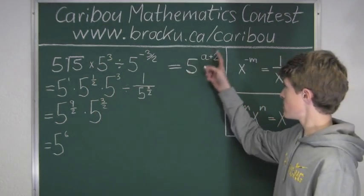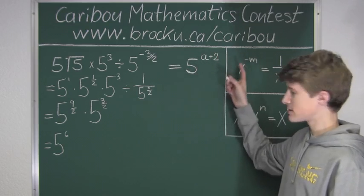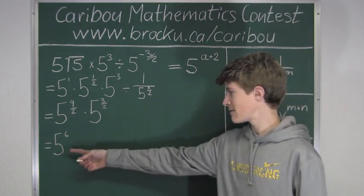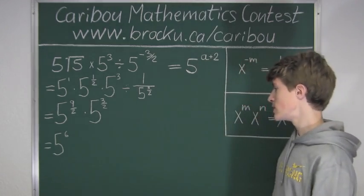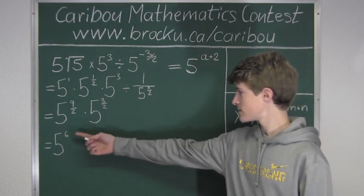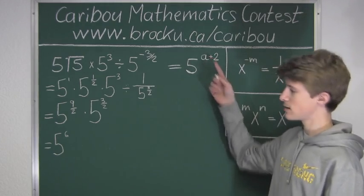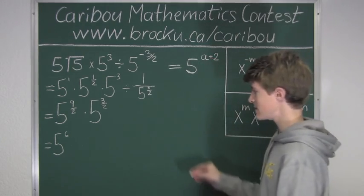If you look at the result here, we have 5 to the power of a plus 2, and here we have 5 to the power of 6. So, we know that we must do 6 minus 2 is 4. So, we know that a must equal 4.